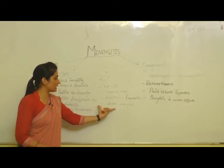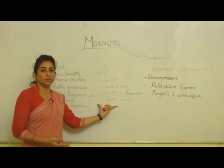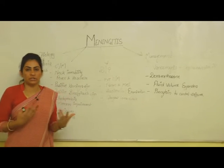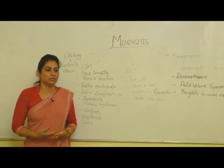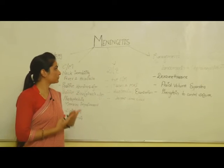The next diagnostic tool is the Glasgow Coma Scale, used to assess orientation, memory, and the consciousness of the patient.